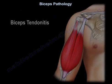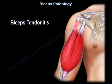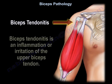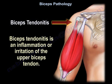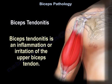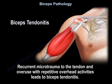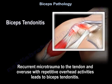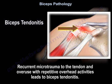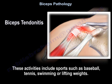Biceps tendonitis is an inflammation or irritation of the upper biceps tendon. It occurs due to microtrauma to the tendon, and overuse and repetitive overhead activities lead to biceps tendonitis. These activities include sports such as baseball, tennis, swimming, or lifting weights.